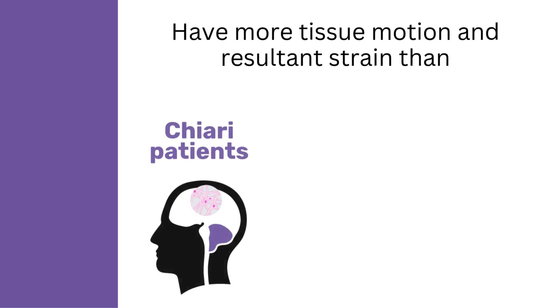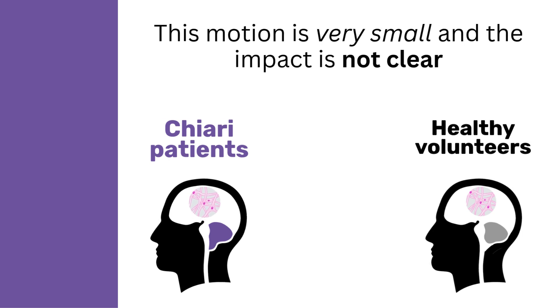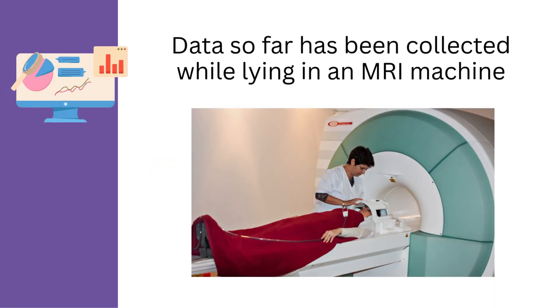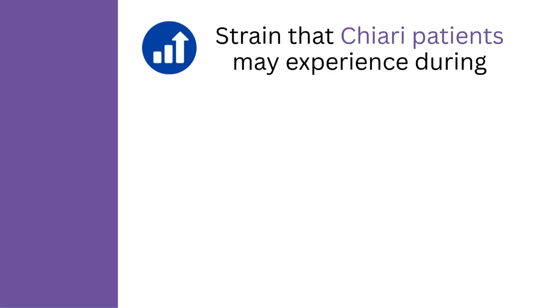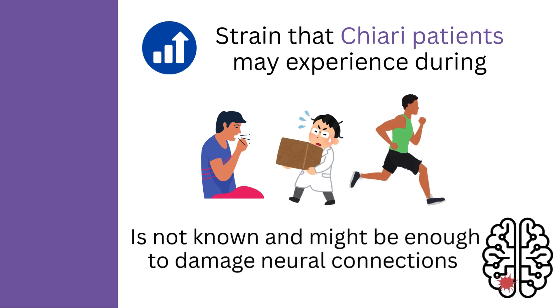So, while it is clear that Chiari patients have more tissue motion and resulting strain than healthy people, in absolute terms this motion is very small and the impact is not clear. On the other hand, the data so far has been collected while lying in an MRI machine, and the increase in strain that Chiari patients may experience during coughing, straining, or exercising is not known and might be enough to damage neural connections.